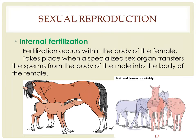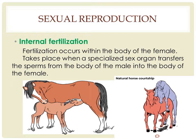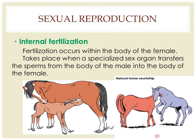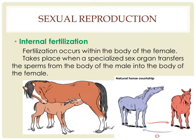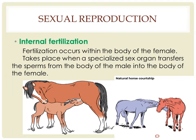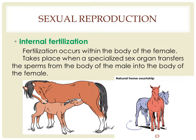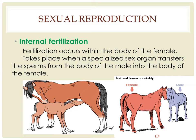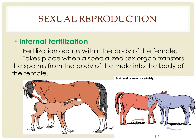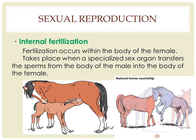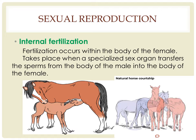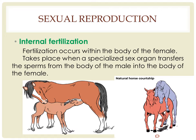On the other hand, internal fertilization occurs within the body of the female animal. It is one characteristic of animals that live on land. It can also occur in some aquatic animals like sharks. Internal fertilization takes place when a specialized sex organ transfers the sperms from the body of the male into the body of the female.